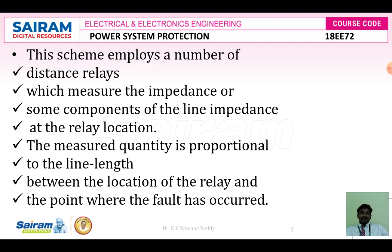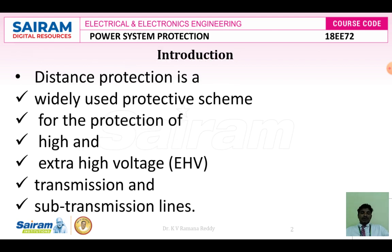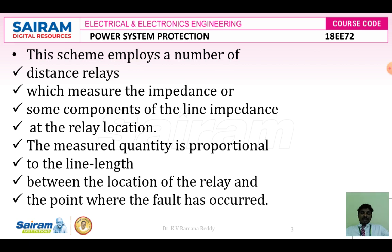From the fault location towards the relay location, if we calculate line parameters like line impedance, line admittance, and line susceptance, based on all these values we conclude whether the fault happened or it is due to a transient. Compared to overcurrent relays, distance protection gives better operation and better performance, because we are calculating the line parameters to determine whether it is a fault or a transient. Distance relays are applicable for extra high voltage, transmission line, and sub-transmission line applications.